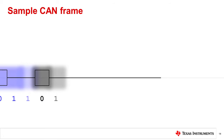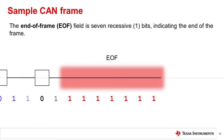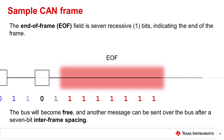After acknowledgement, the transmitter sends an end-of-frame field, or EOF field, which marks the end of a CAN message. This is a field of 7 sequential recessive bits. After the EOF, the bus will become free, and another message can be sent after a 7-bit inter-frame spacing. No node transmits during this inter-frame spacing.